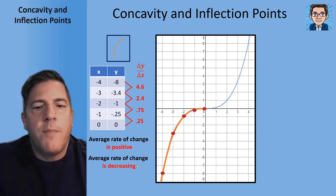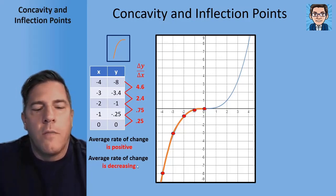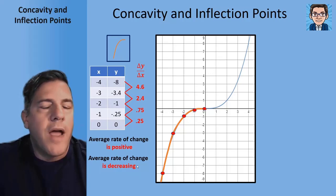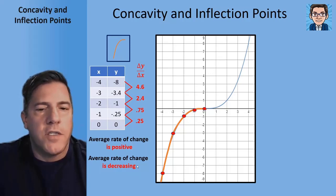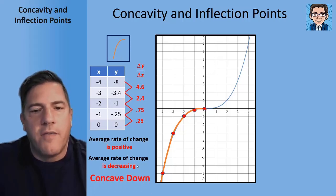The shape of that graph where the average rate of change is decreasing, we call that concave down.